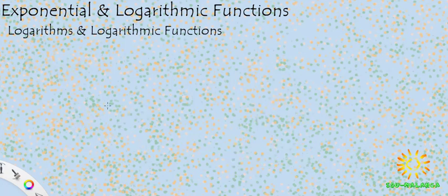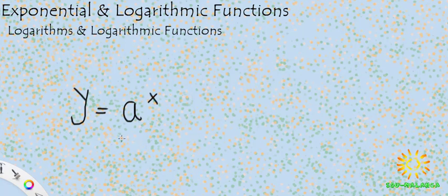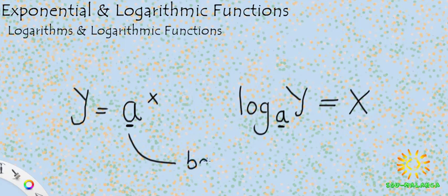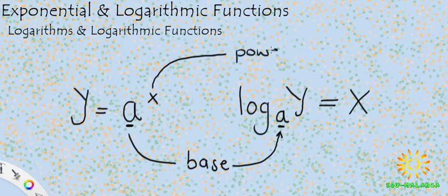So how do logs work exactly? I'm going to rewrite the exponential expression: y is equal to a to the power of x. The log function that corresponds to this expression would look like this: log base a of y equals x. The base stays the same in both expressions. The power or exponent is what we're solving for in the log. The log function can be found in your calculator — pause this video and find it. In the calculator it may look like log with a box for the base and another box for the value.